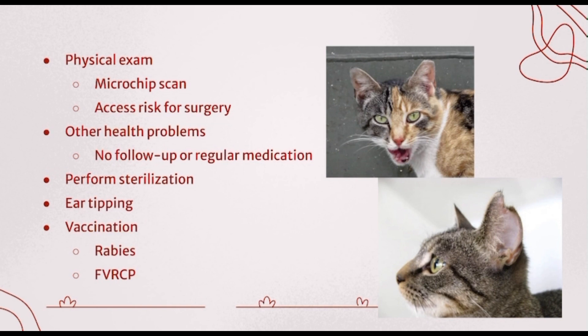Then the sterilization is performed, assuming everything looks good and the cat is okay to go under surgery. The cat is also ear-tipped — here are two pictures of examples of different kinds of tips. This lets animal control and people in general know that this animal has been brought in and is sterilized, so they do not need to be captured and brought in again. Because this is the one time the cat will come in, they will also get a rabies vaccine and a FVRCP vaccine. You skip the FIV testing or anything that isn't necessary and just give the vaccines that are required.